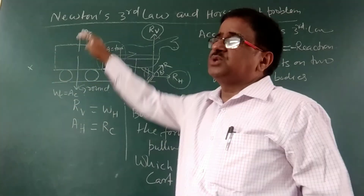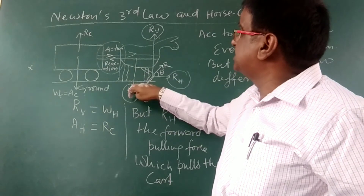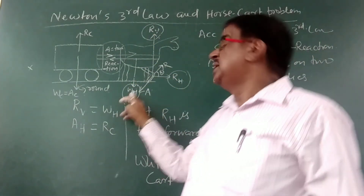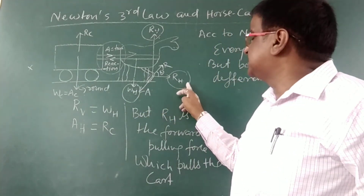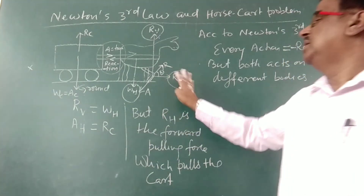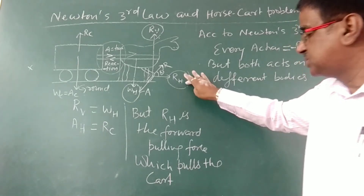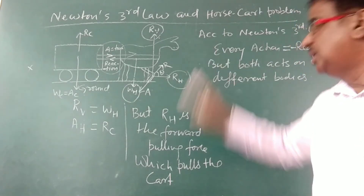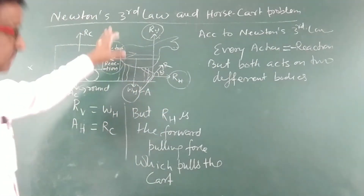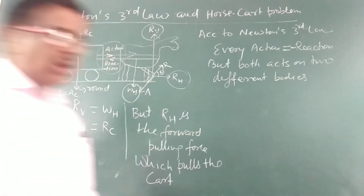The vertical component of the ground reaction is balanced by the weight of the horse. Only Rx — the horizontal component of the reaction — is free and unbalanced. This horizontal component is responsible for pulling the cart along the horizontal direction. That is how the cart is pulled by the horse.